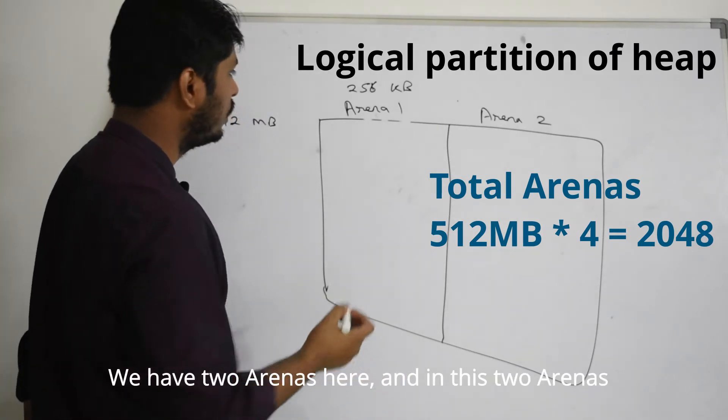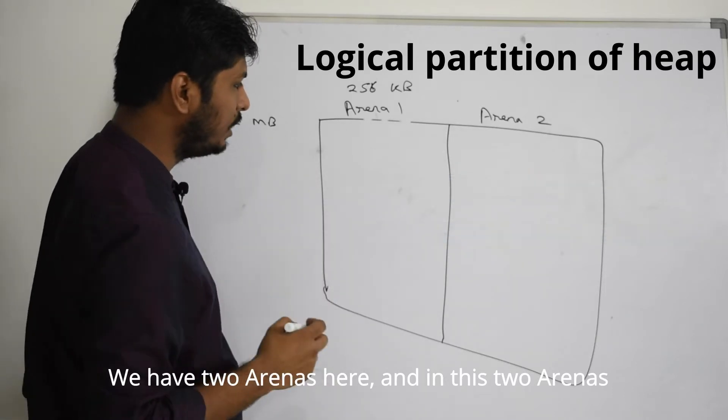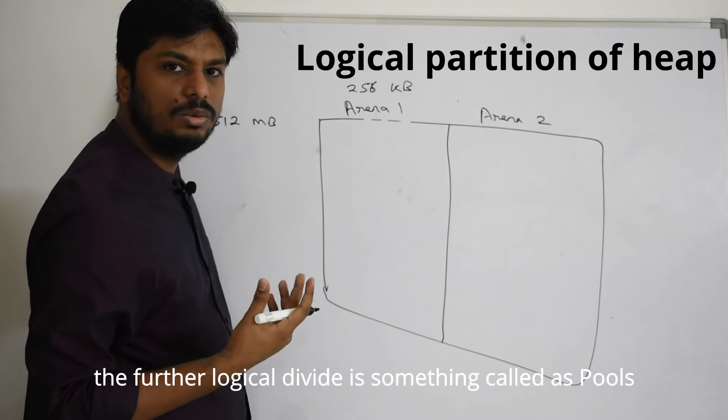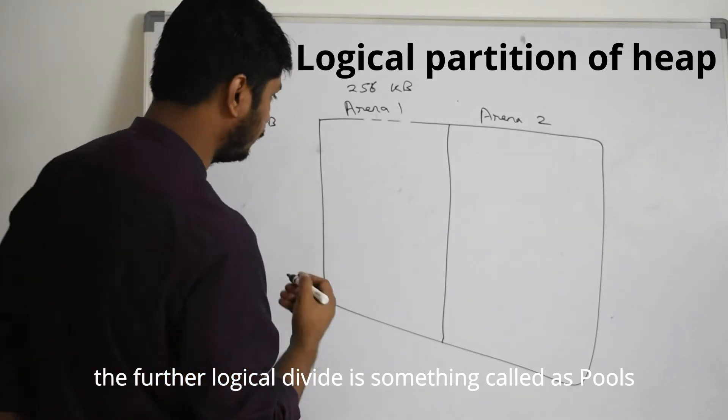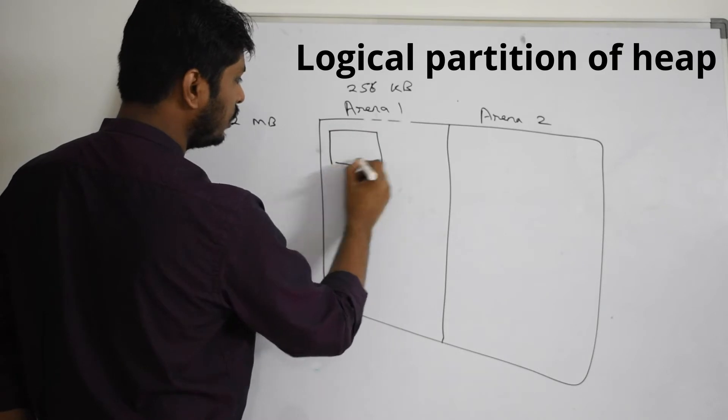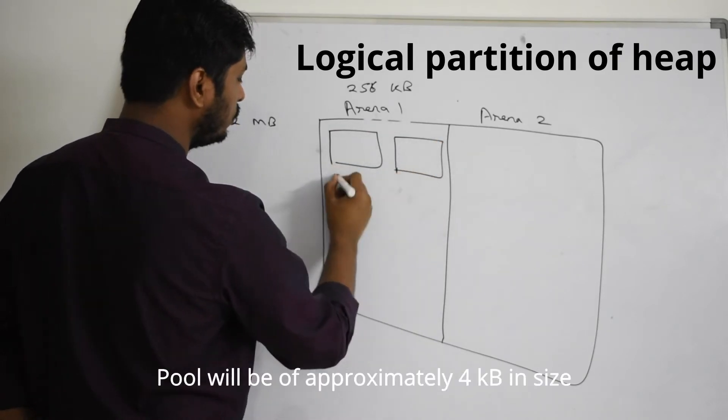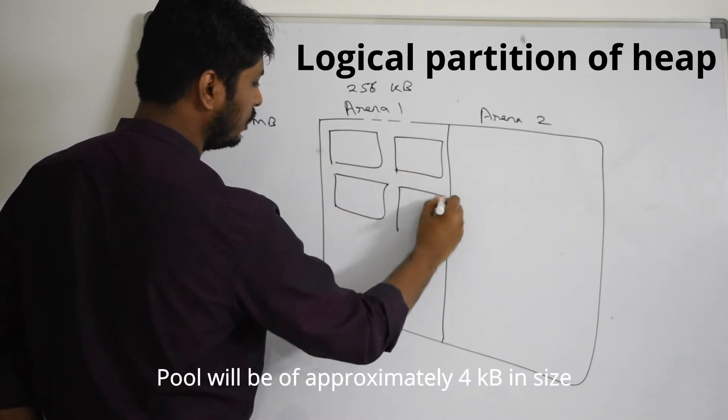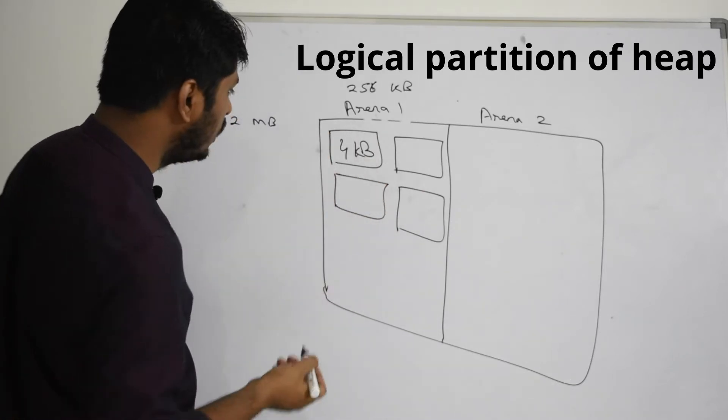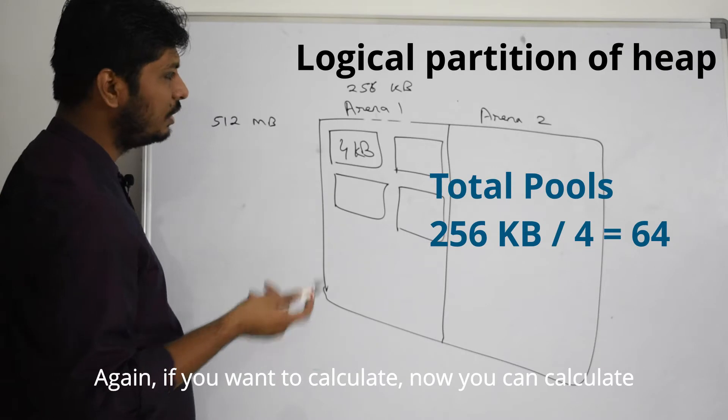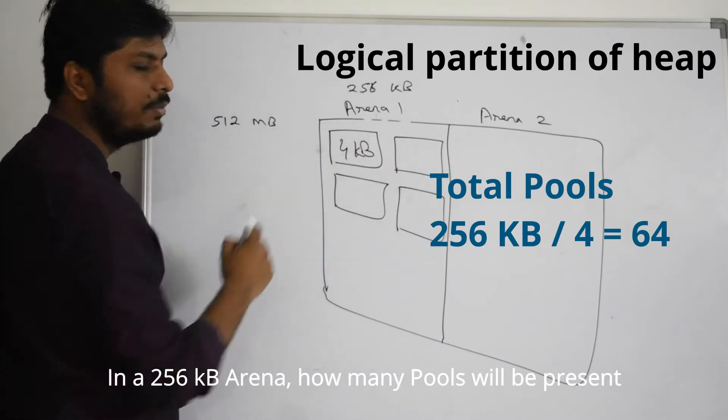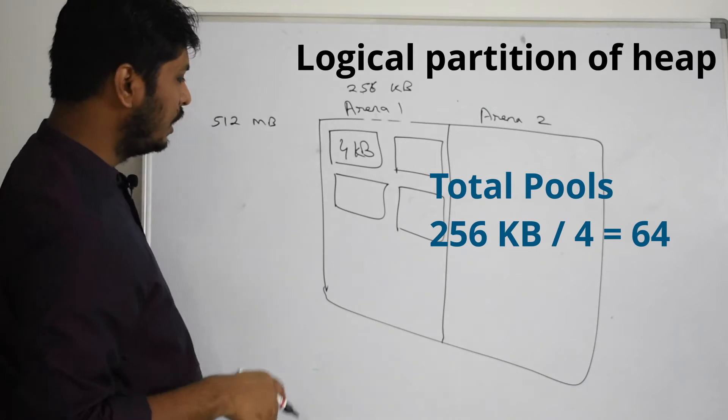We have two arenas here and in these two arenas the further logical divide is into something called pools. We will have some pools here that will be approximately 4 KB in size. If you want to calculate, in a 256 KB arena you can determine how many pools will be present.